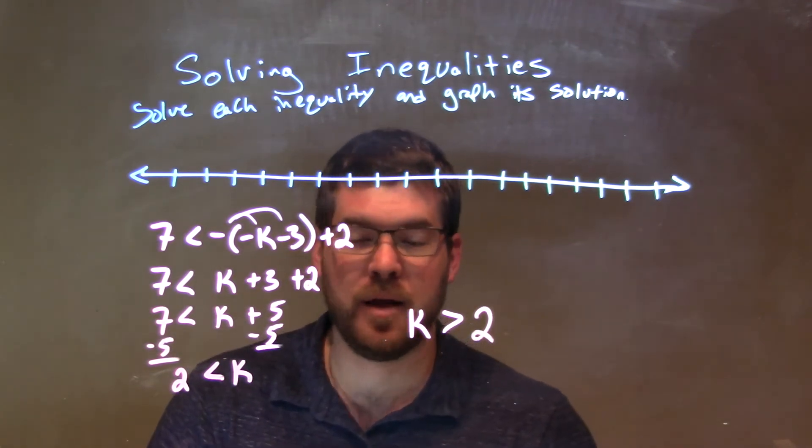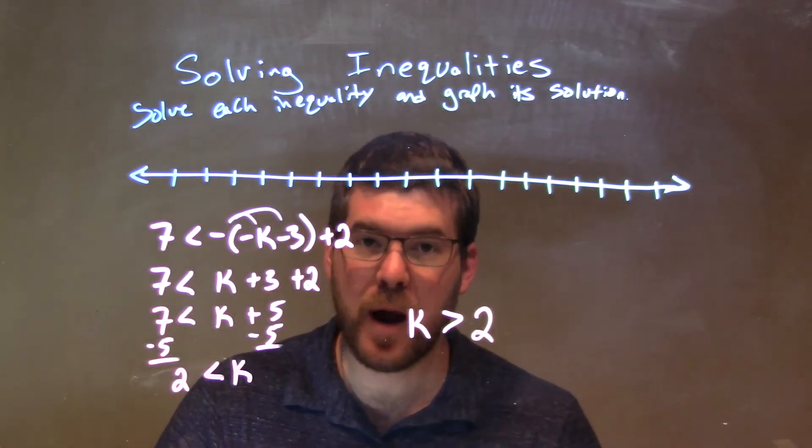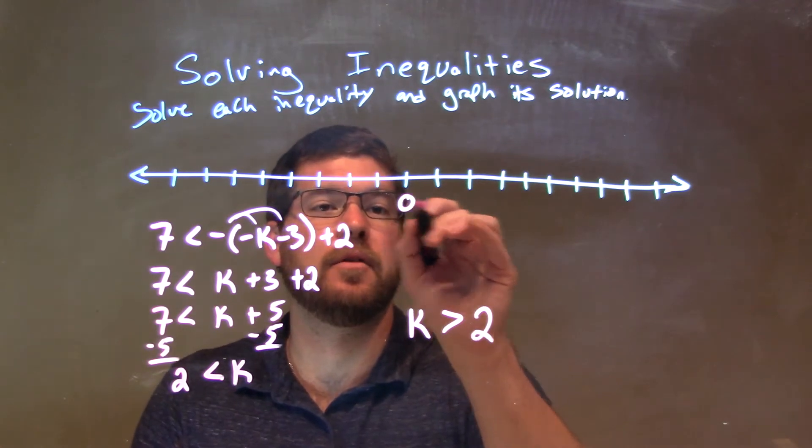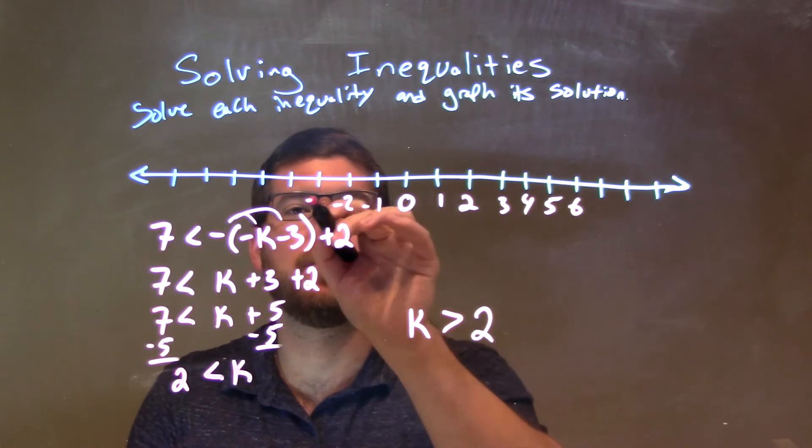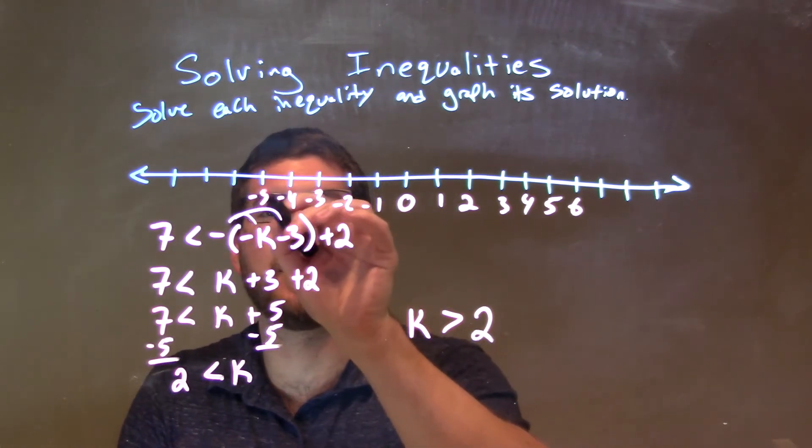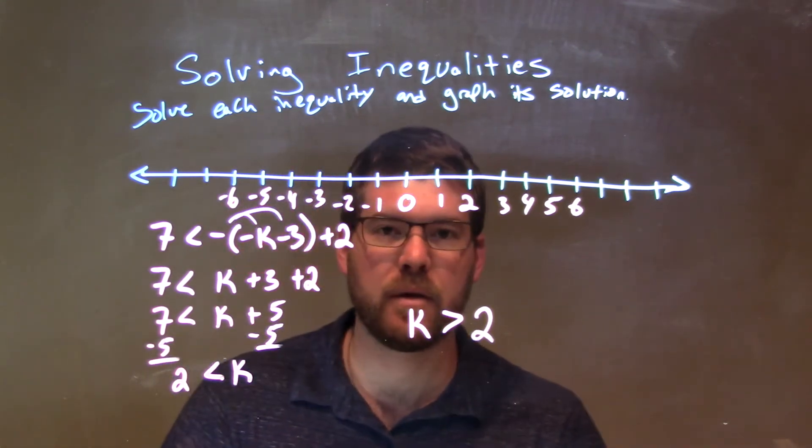Now we have our final answer. If k is greater than 2, I need to graph it. Let's put 0 right here, then 1, 2, 3, 4, 5, 6, negative 1, negative 2, negative 3, negative 4, negative 5, and negative 6.